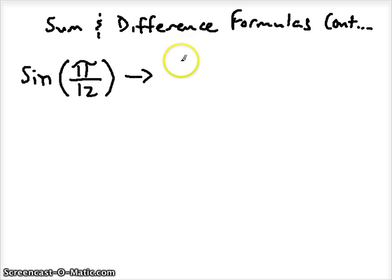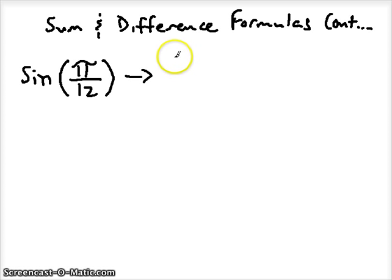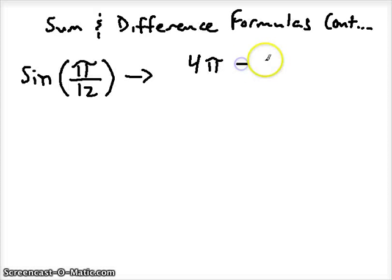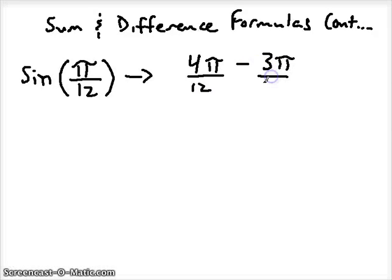It's also helpful to be able to work with fractions and know how to reduce them. I want to be able to get 1/12 pi. I could add some things together, but that would be really tricky. I could also subtract. What if I subtracted 4 minus 3? That would give me a positive 1/12th.